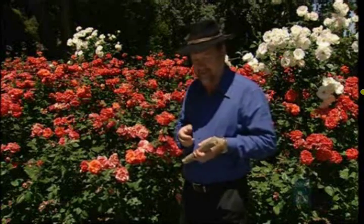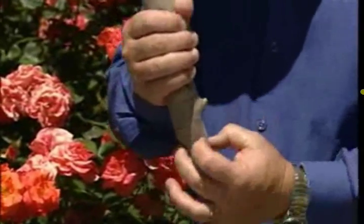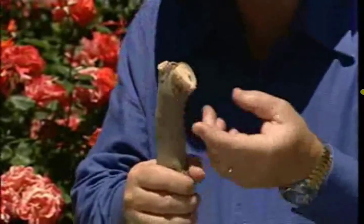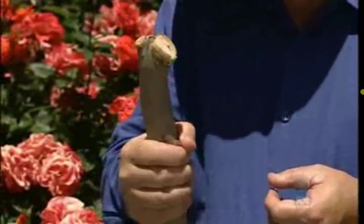In other words, any cell can take on the role of any other cell, and each cell takes its signal as to which genes it will express from the immediate environment. For example, this cutting. If you stick that into the ground, the cells at the base of the cutting will produce roots, whereas these up here in the sunshine and the air will produce shoots and leaves.